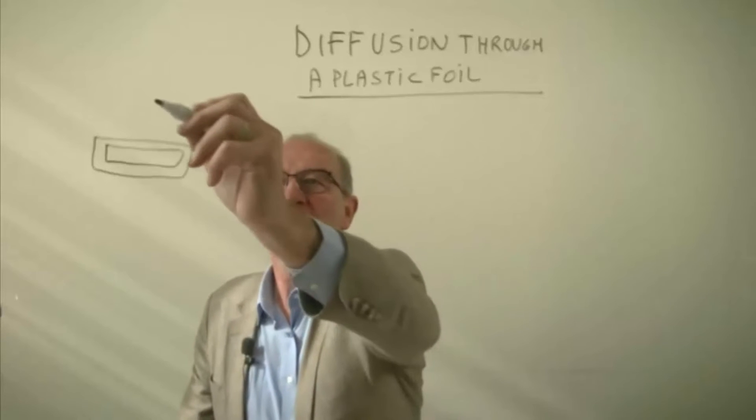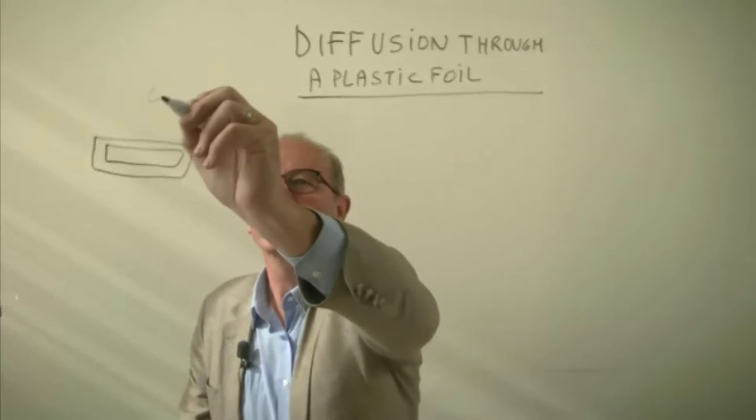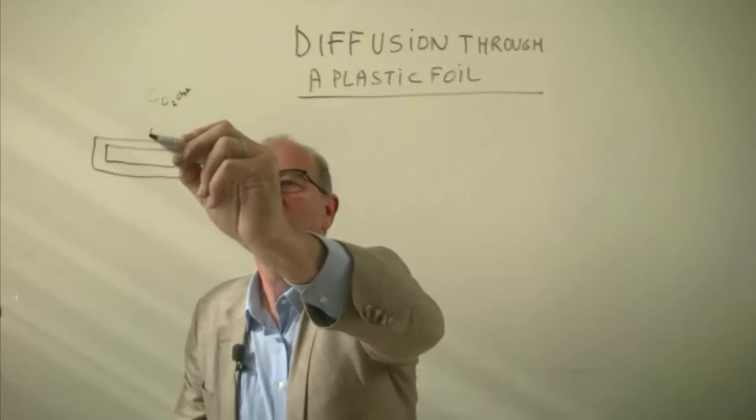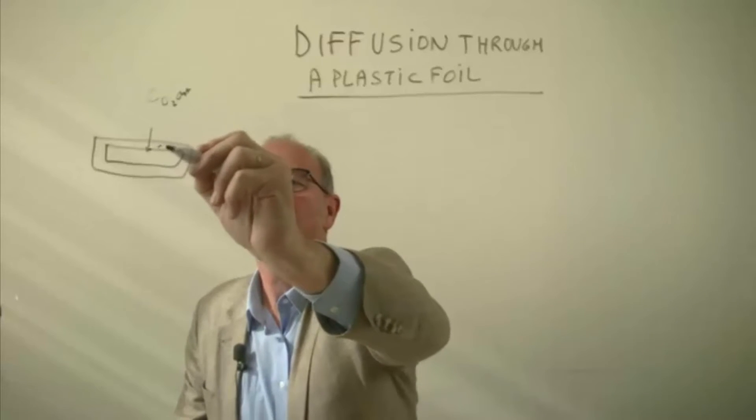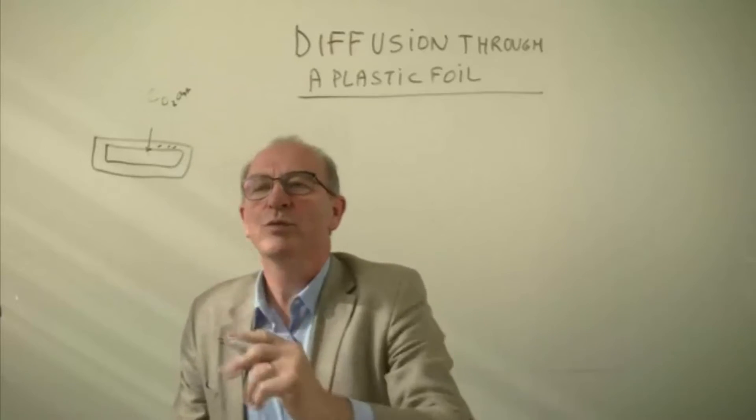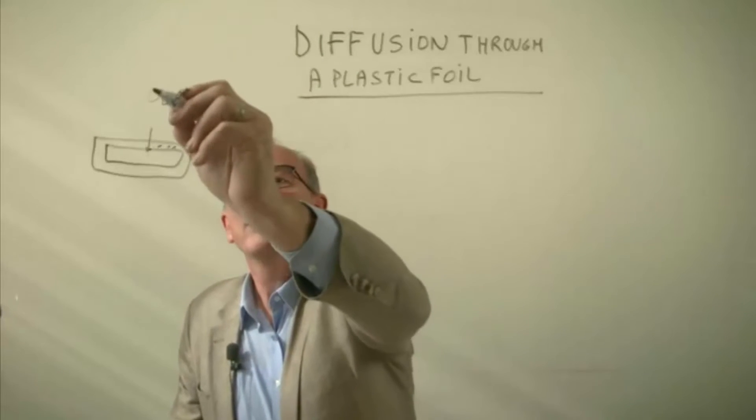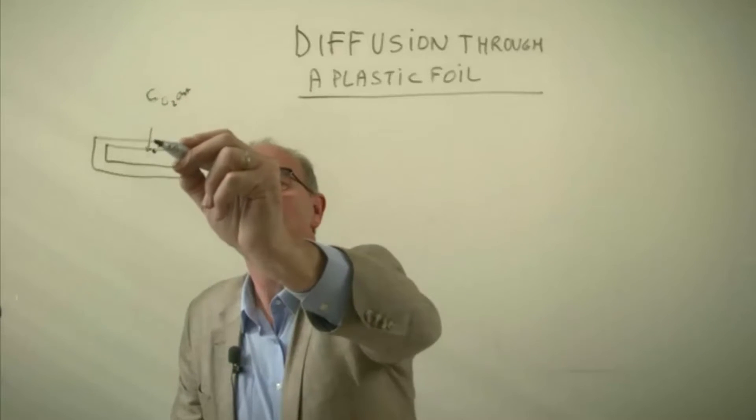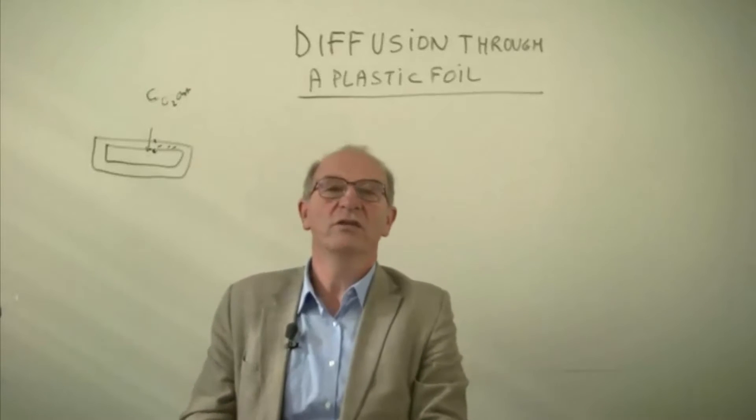So in the outside, in the air, we have of course a concentration of oxygen. And this oxygen will diffuse through this plastic film into the product. And we could wonder if we have here a certain concentration, what is the concentration at the inside of the foil if we have steady state diffusion?